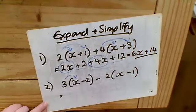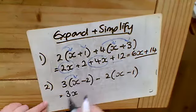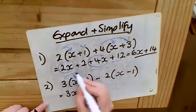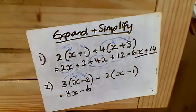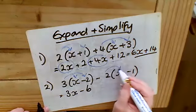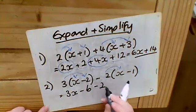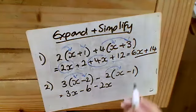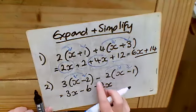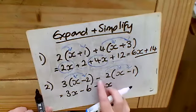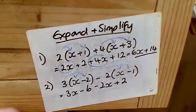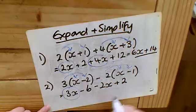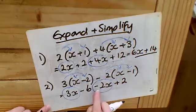For the next one, expand the brackets one at a time — take your time, less likely to make mistakes. 3 times x is 3x. I've got a negative term: 3 times negative 2 — positive times a negative gives me negative 6. Now negative 2 times x gives negative 2x, and this last part, where most mistakes are made: negative 2 times negative 1 — same signs give a positive — so that gives me plus 2.